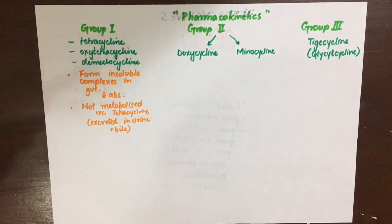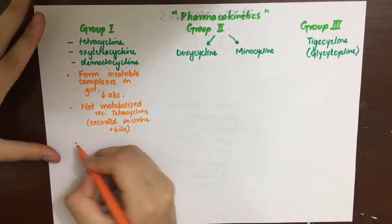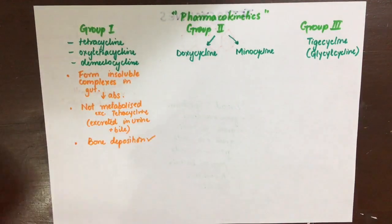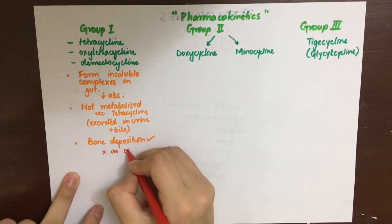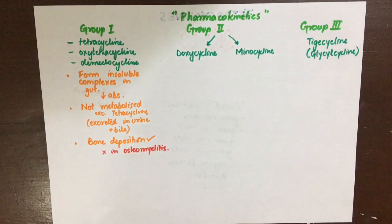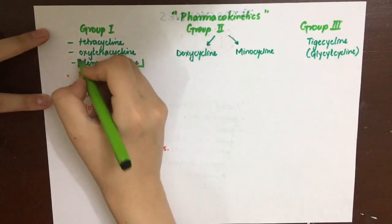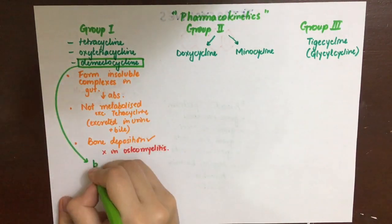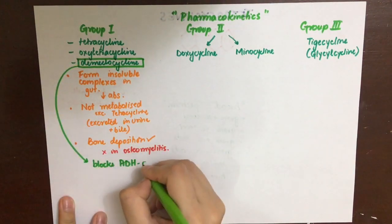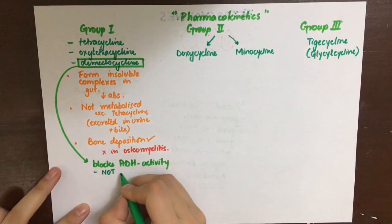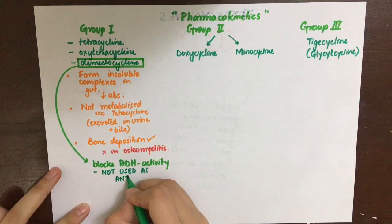The chelating property also causes Group 1 tetracyclines to be deposited in bone, but once deposited, their antimicrobial property is lost — so they cannot be used in osteomyelitis. For osteomyelitis, you can use clindamycin instead. Demeclocycline has nephrotoxic effects and blocks ADH activity, so it is not used as an antibiotic but rather in syndrome of inappropriate ADH secretion.